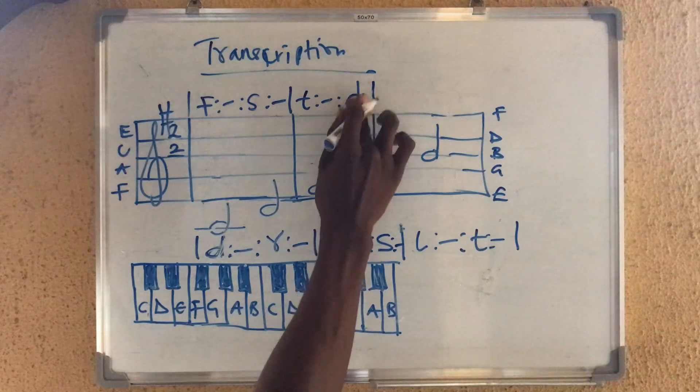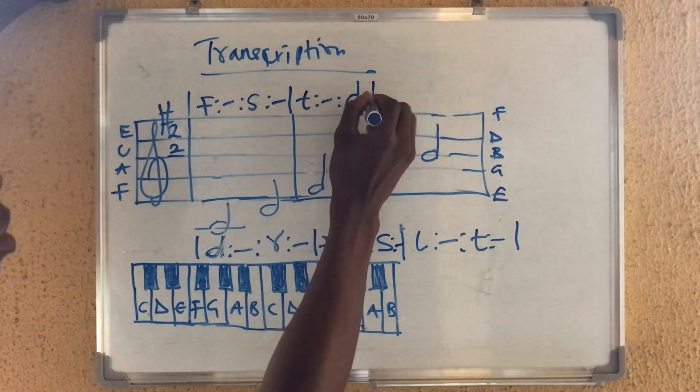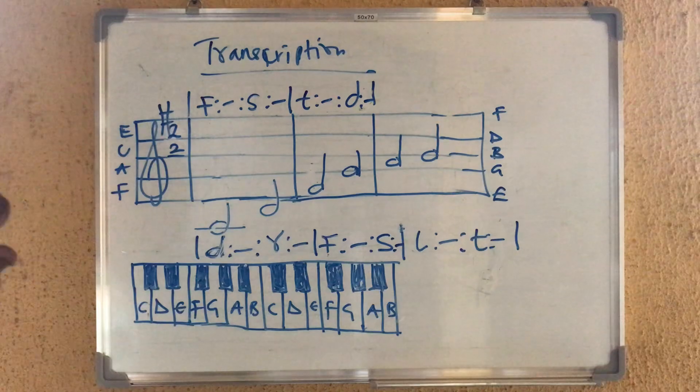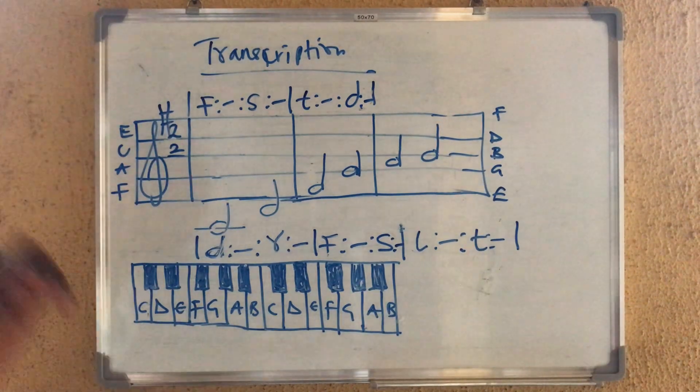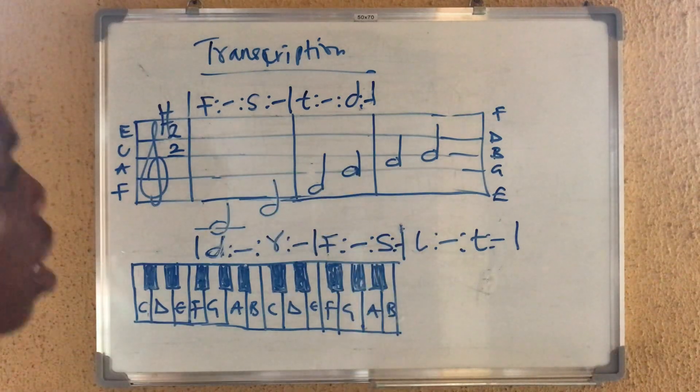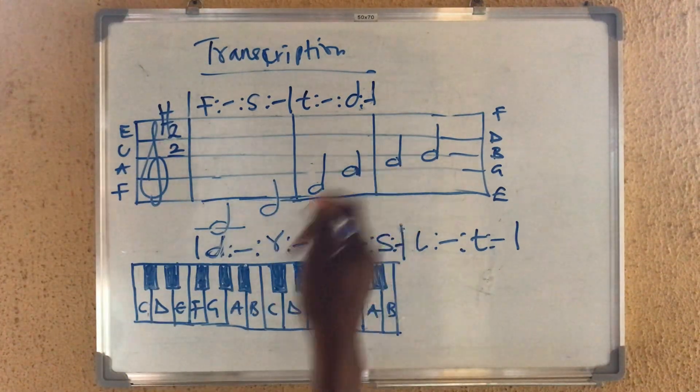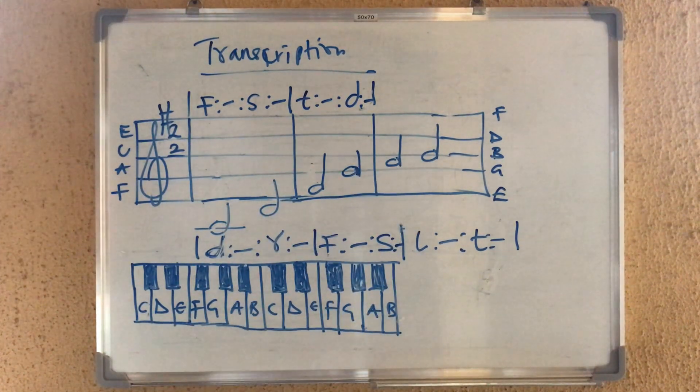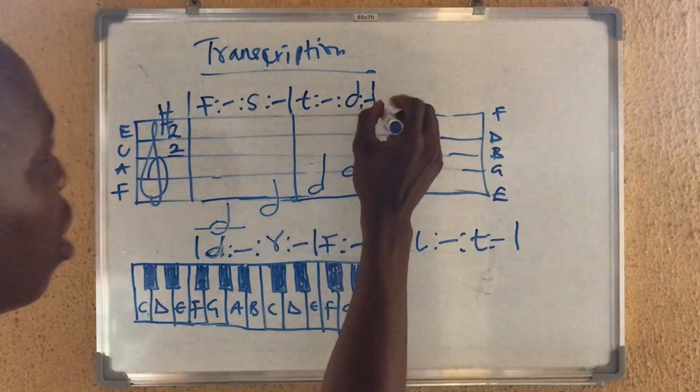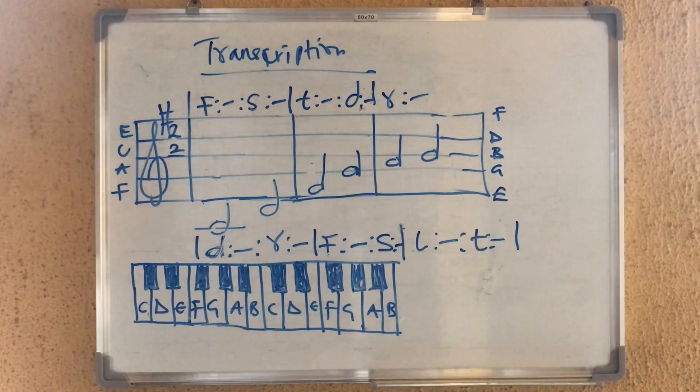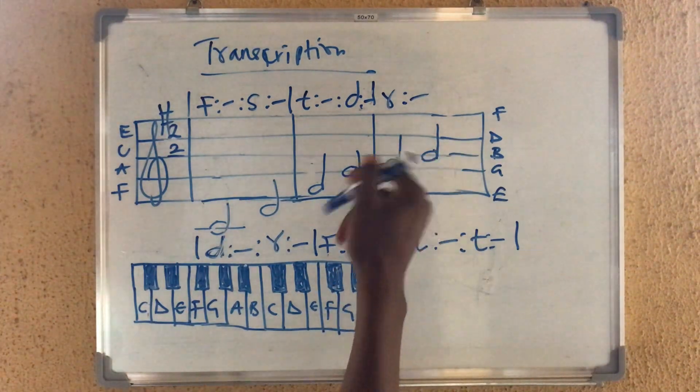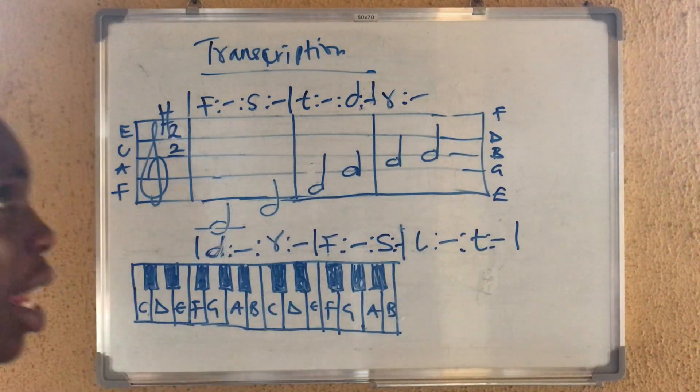So we sharp F so that our F is going to be ti. You understand? Then we have our G. As you can see, this is the G line which is going to be do. I believe someone is understanding something. So if you are understanding something, if you understood something from this video, just drop it on the comment section there. I will appreciate it. Then we have A, which is the next one in the space. So A in key G is what? Re. Yes, we have it.